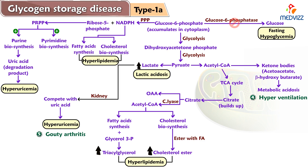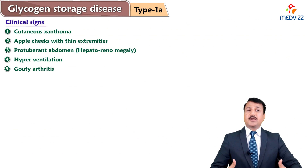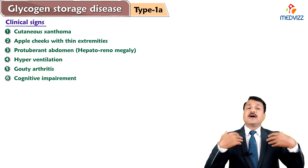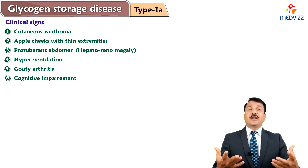In summary, the signs seen in Von Gierke Disease patients are as follows. Laboratory signs include fasting hypoglycemia, lactic acidosis, hyperlipidemia, ketoacidosis, and hyperuricemia. Clinical signs and symptoms include protuberant abdomen due to hepatorenomegaly, full or apple cheeks, cognitive impairment, thin extremities, gouty arthritis, xanthomas due to hyperlipidemia, and hyperventilation due to metabolic acidosis.